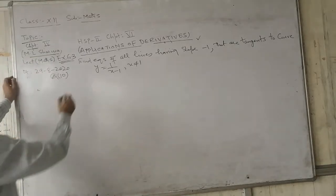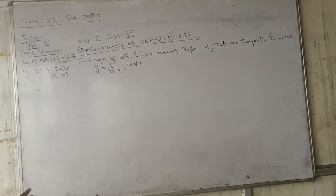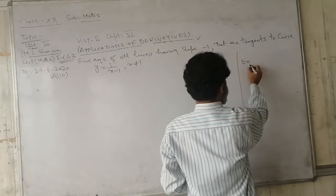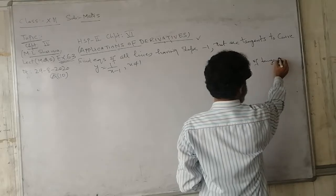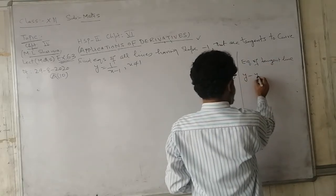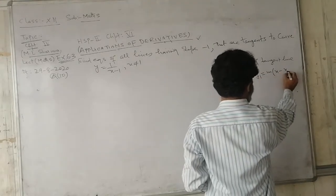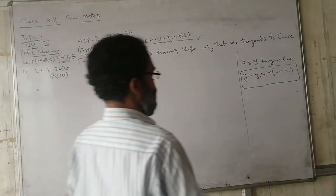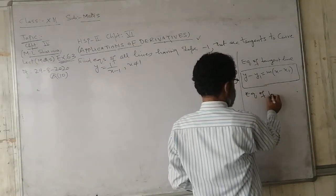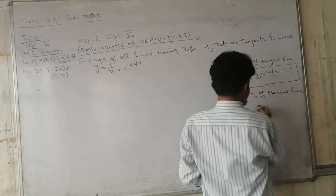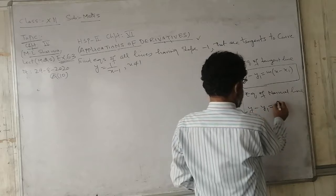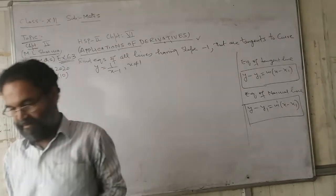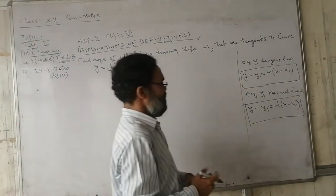To find the equation of a tangent, I must find the slope. Yesterday I wrote two formulas. The equation of a tangent line is given by y − y₁ = m(x − x₁). This is the formula used for finding the equation of a tangent line. For finding the equation of a normal line, the formula is y − y₁ = m'(x − x₁).